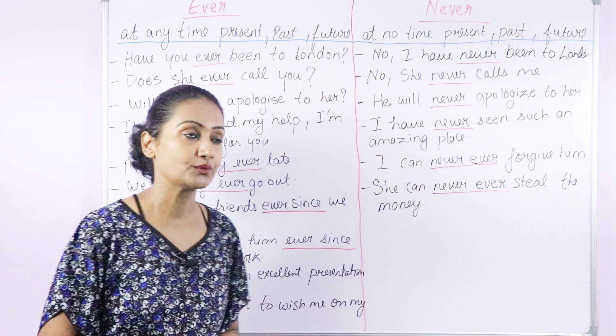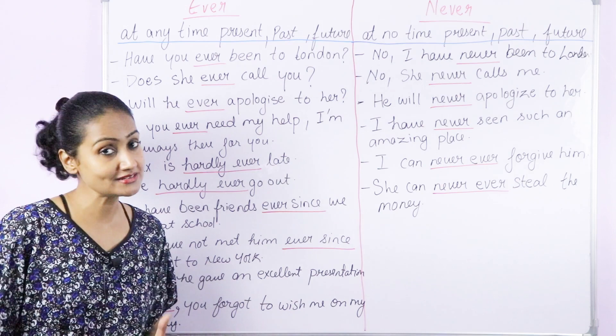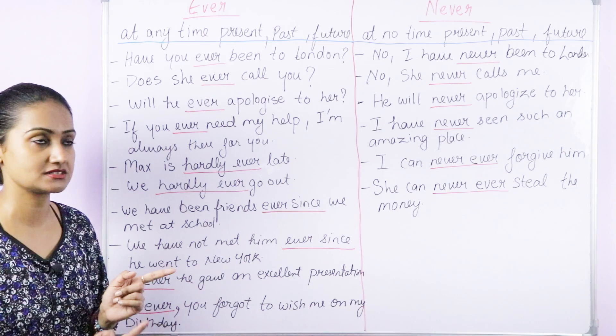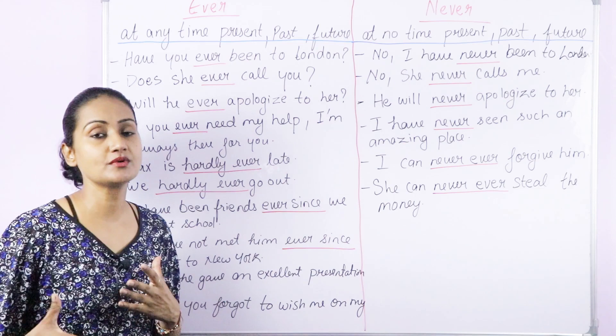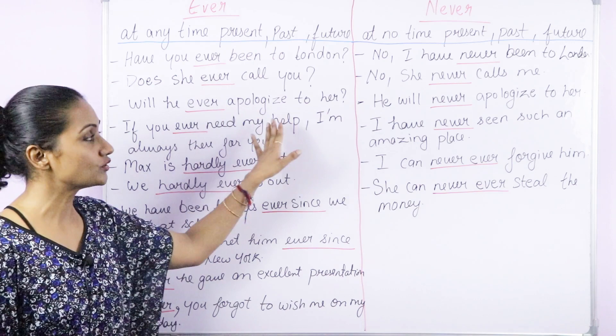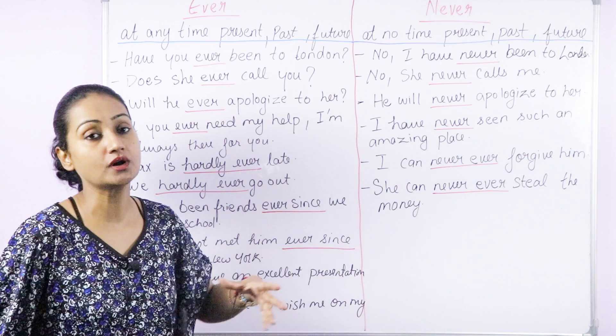Next: Does she ever call you? In the present, at any time, does she call you? No, she never calls me. This is simple present, that's why we say 'calls me.' Will he ever apologize to her? Here we are talking about the future — at any time in the future will he apologize to her? No, he will never apologize to her — at no time in the future will he apologize to her.